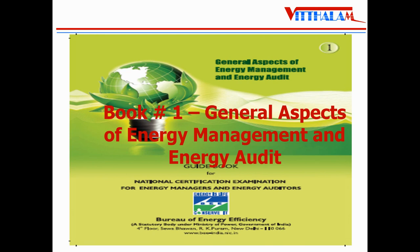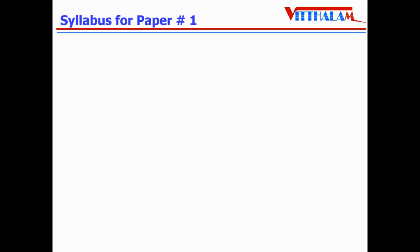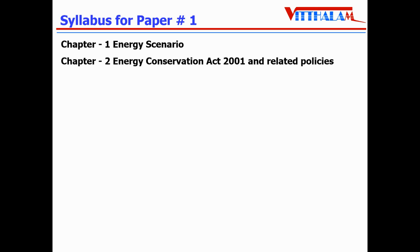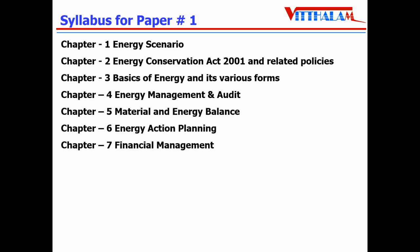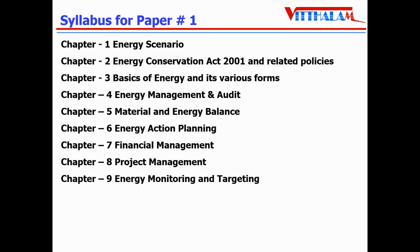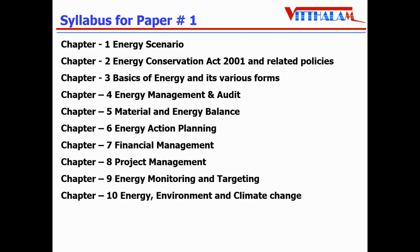Book number 1 is General Aspects of Energy Management and Energy Audit. Topics covered include: Energy Scenario, Energy Conservation Act and Related Policies, Basics of Energy and its Various Forms, Energy Management and Audit, Material Energy Balance, Energy Excellence Planning, Financial Management, Project Management, Energy Monitoring and Targeting, Energy Environment and Climate Change, and New and Renewable Energy Sources. That is the syllabus for paper number 1.